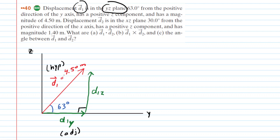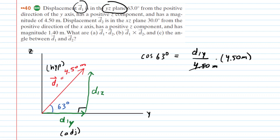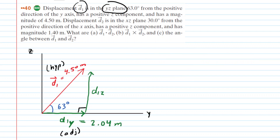The adjacent side and hypotenuse calls to mind the cosine. So we say that the cosine of 63 degrees equals the adjacent, which is D1Y, over the hypotenuse, which is 4.5 meters. We multiply both sides by 4.5 meters — it cancels on the right-hand side — and we end up getting approximately 2.04 meters for the Y component of vector D1. Let's label that on our figure.